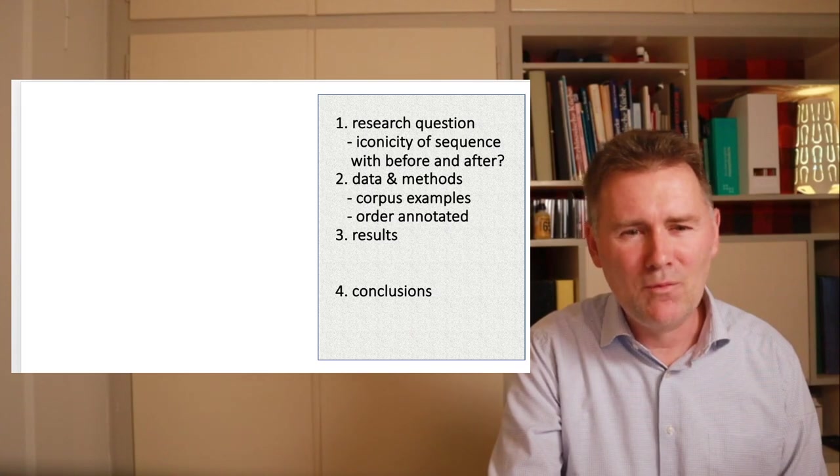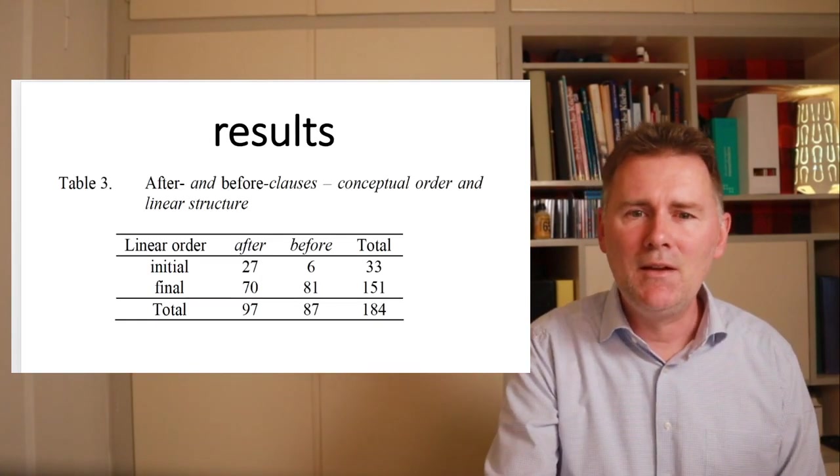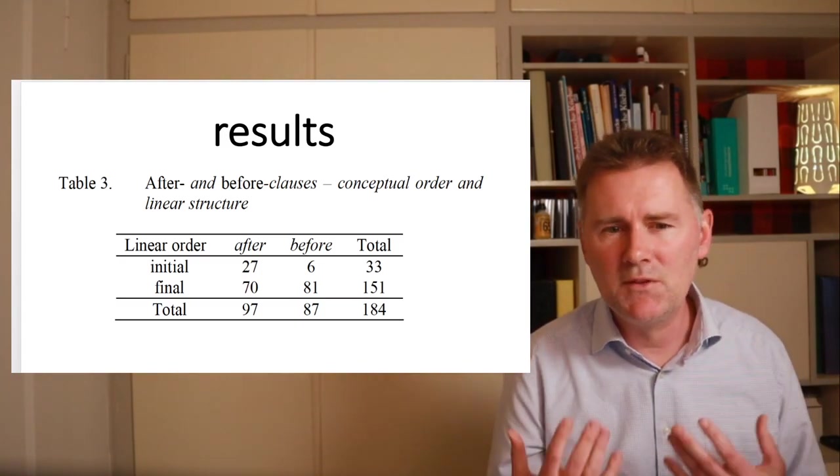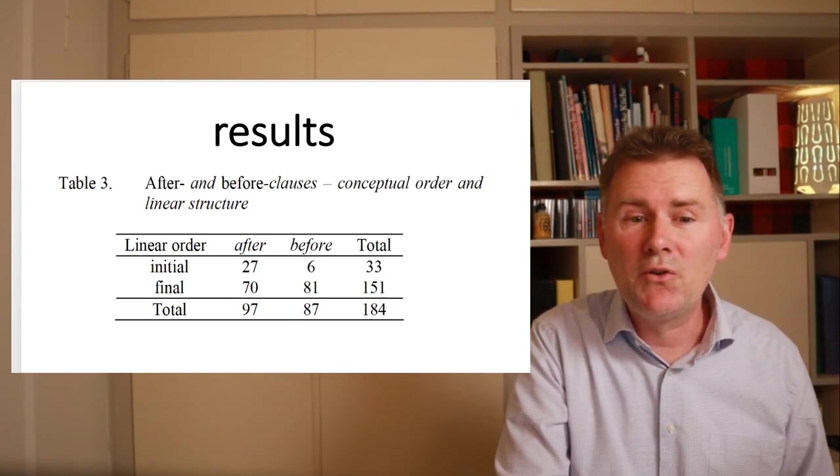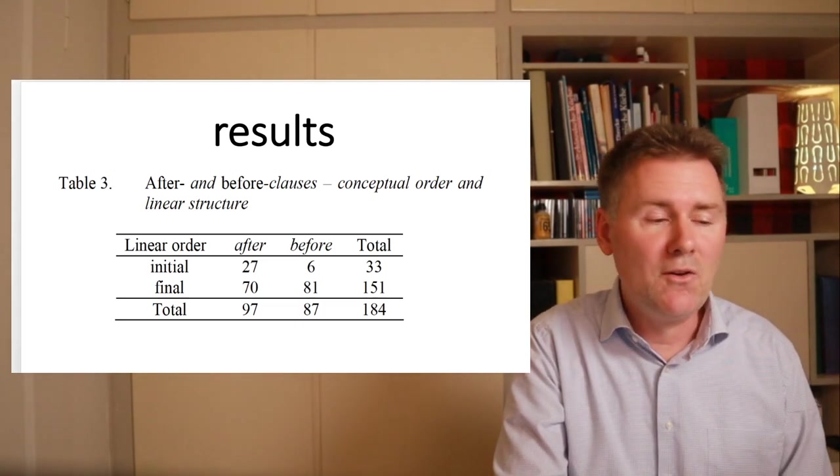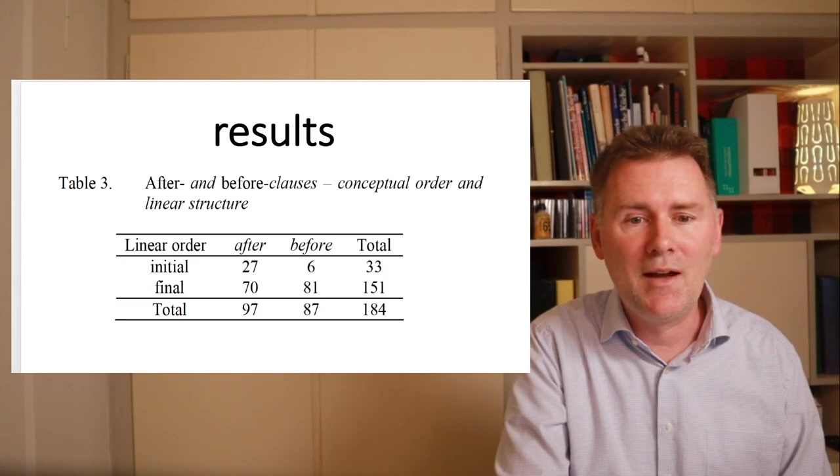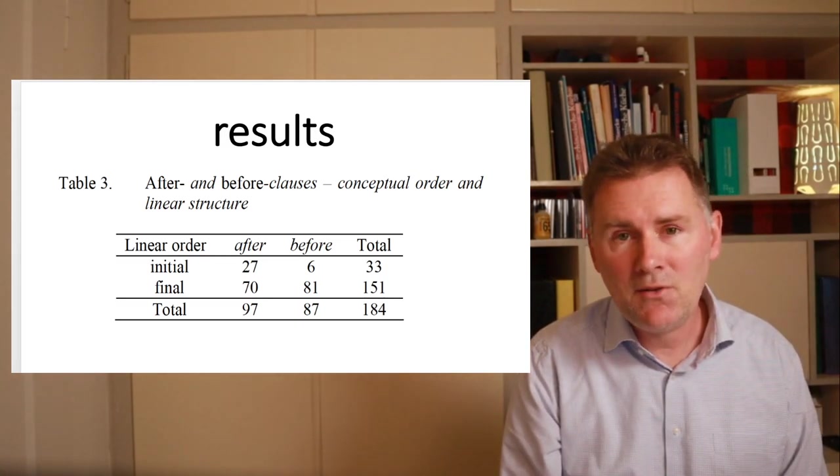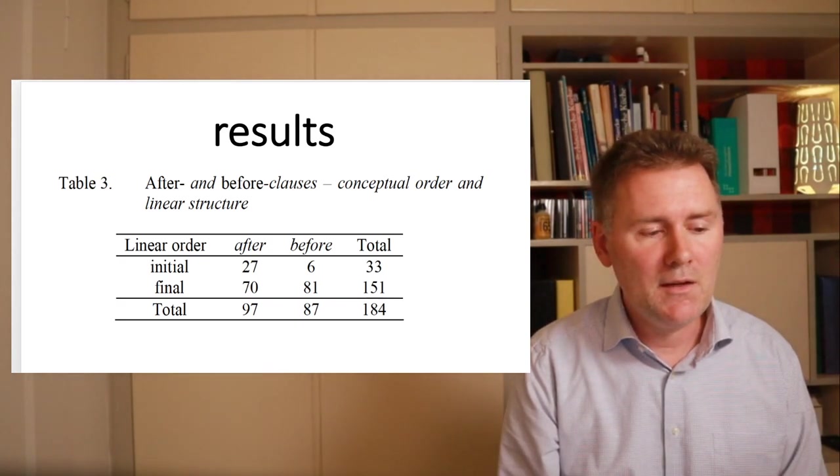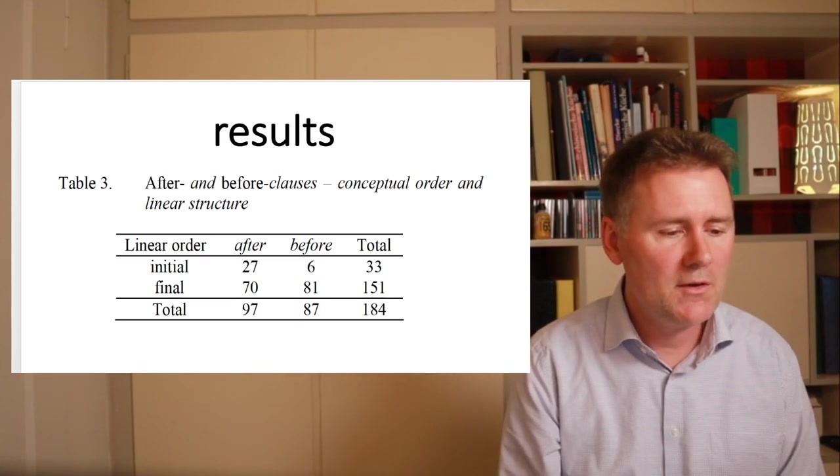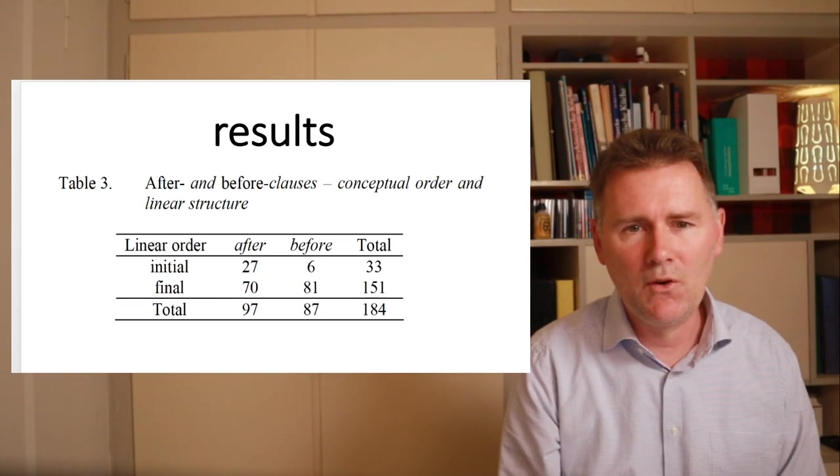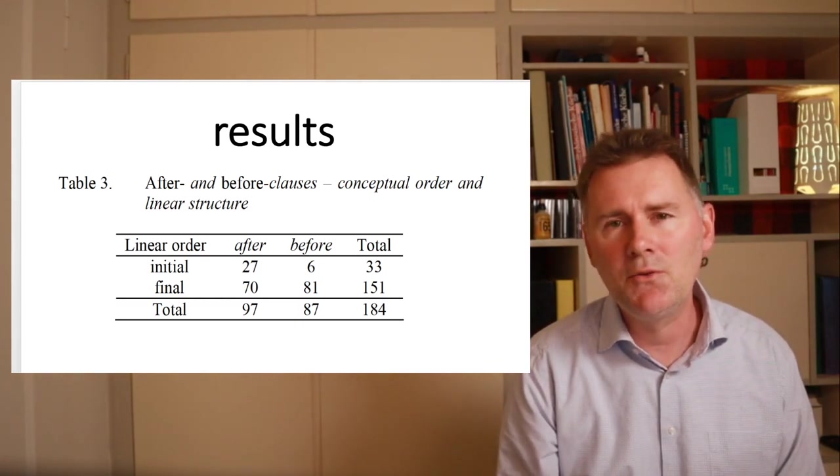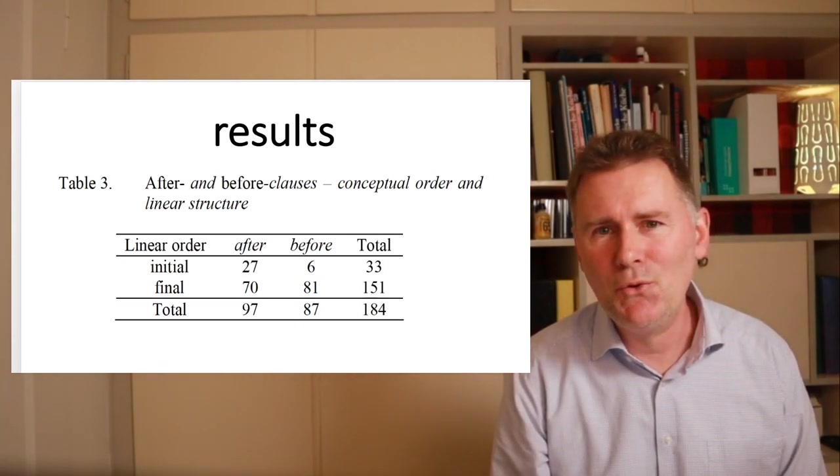Now, a couple of minutes ago, I asked you to approach the results section in such a way that you should in your mind imagine the findings, and then check diagrams or tables of results to see if what the researchers found actually corresponds with your expectations. And in Holger's paper, there's a table that you see here on this slide. And it's a cross table that lists the linear order of main clause and subordinate clause. And it cross tabulates initial and final order with after clauses and before clauses. So take a minute to look at the table and check for yourself whether or not that corresponds to your expectations.